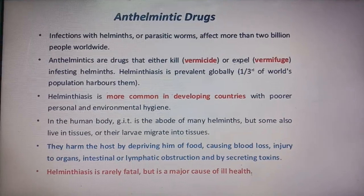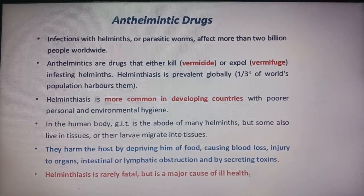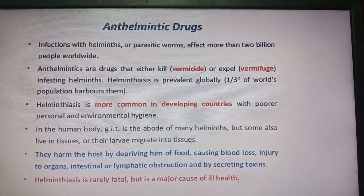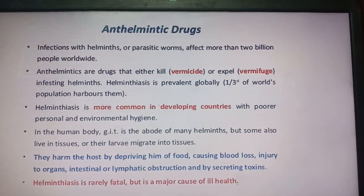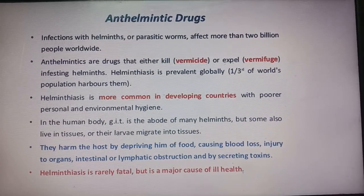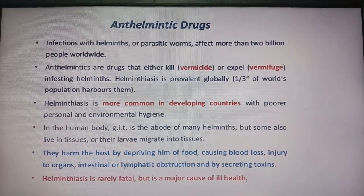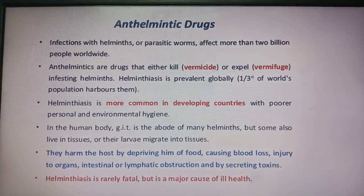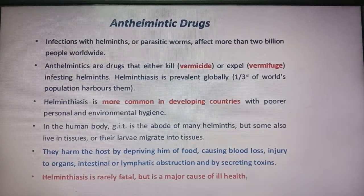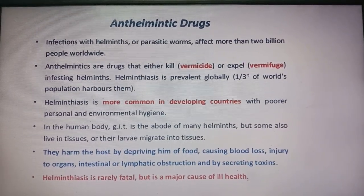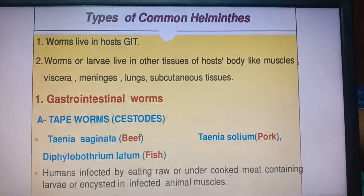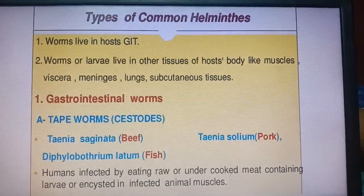In the human body, the GIT is the abode of many helminths, but some also live in tissues or migrate into other tissues. They harm the host by depriving him of food, causing blood loss, injury of organs, intestinal and lymphatic obstruction, and by secreting toxins. Helminthiasis is a major cause of illness.